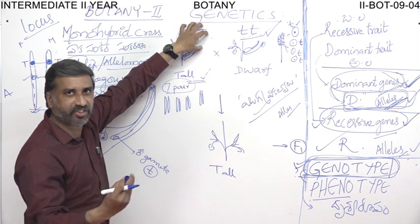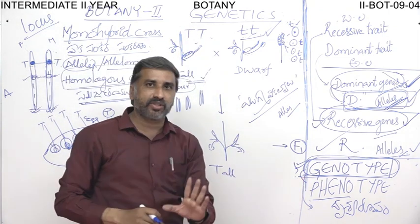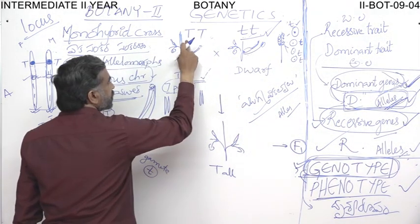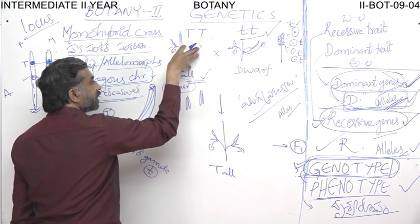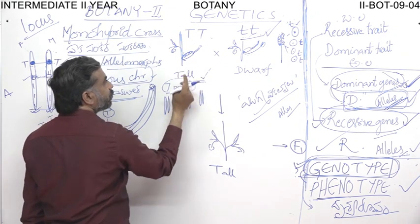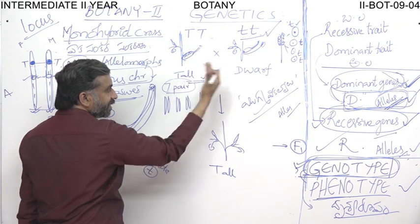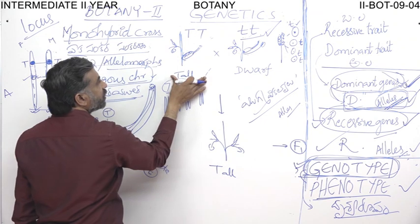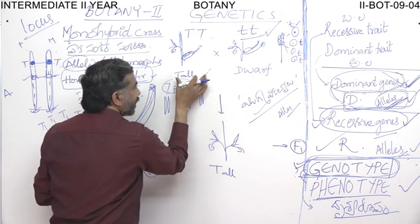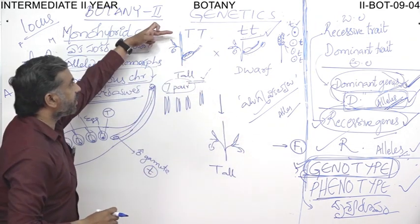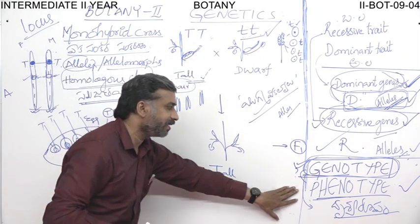The genetic composition of an organism is termed as genotype. The external appearance of an organism — whether plant, animal, or human — is the phenotype. So the genotype of a tall plant is capital T capital T, and the external appearance of the organism is nothing but the phenotype.